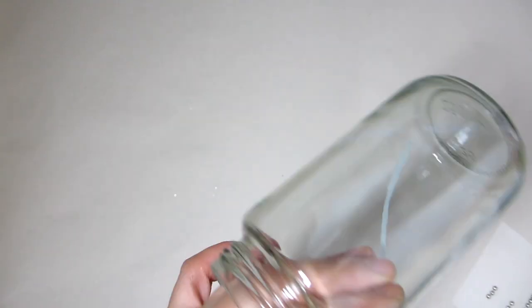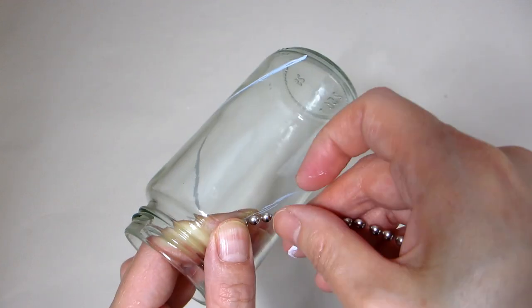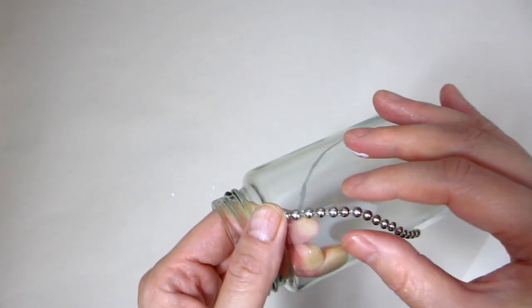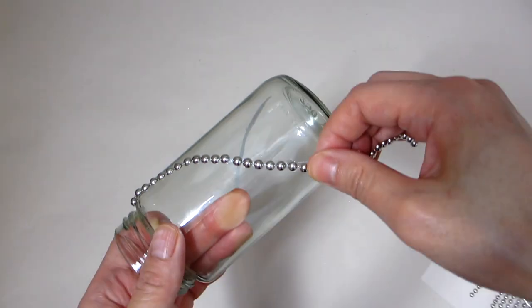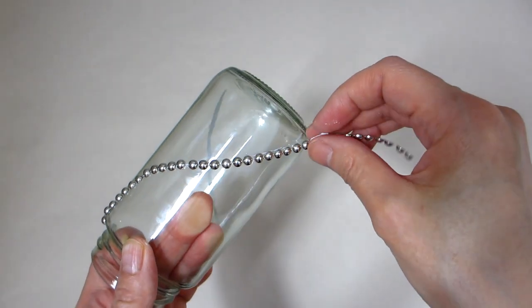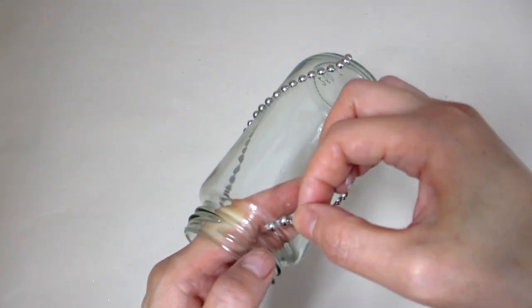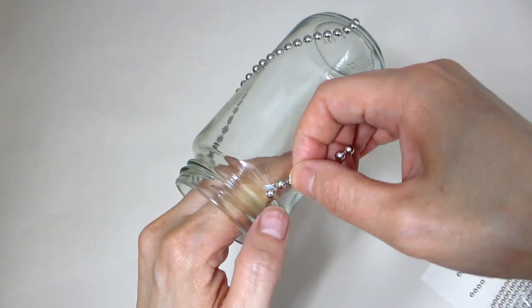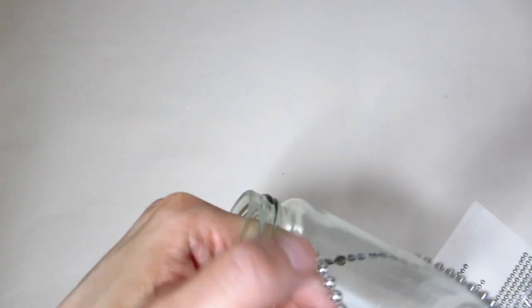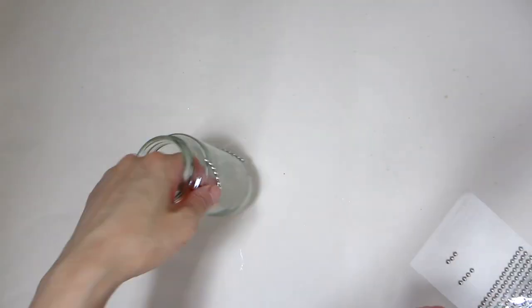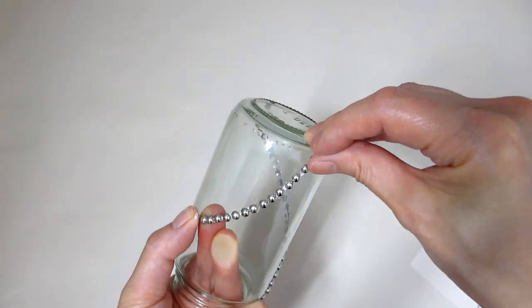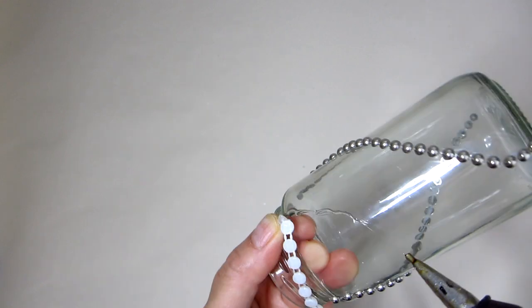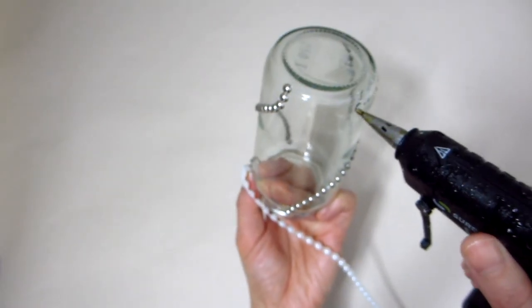Next, I'm applying a row of silver metallic bead stickers to the jar right on top of one of the curved lines. And then I repeat the same process by applying a string of pearl beads adhering it to the jar using some hot glue.